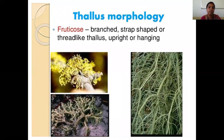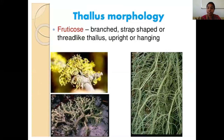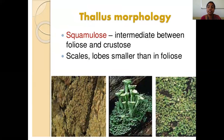The third type is fructicose lichen — it is a highly branched, strap-shaped or thread-like thallus, either in the upright position or hanging, usually pendulous and highly feathery in nature. That's why the name 'fructicose' is given. If you take a section there is no upper and lower cortex — only a cortex — and the medullary region is trapped with the algal members.